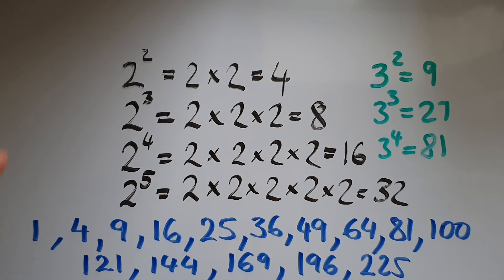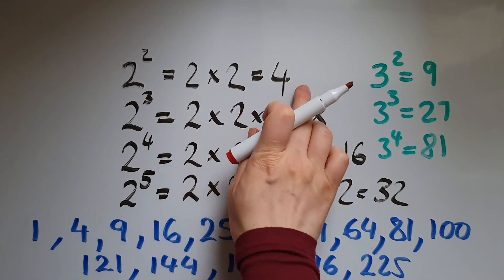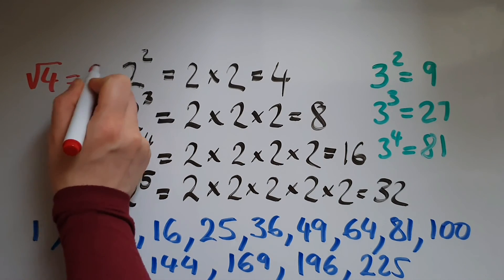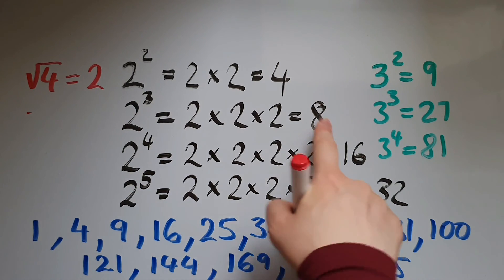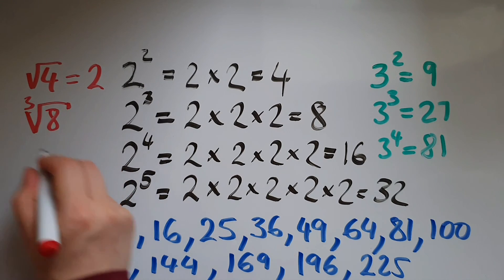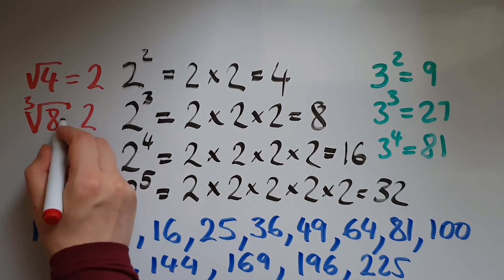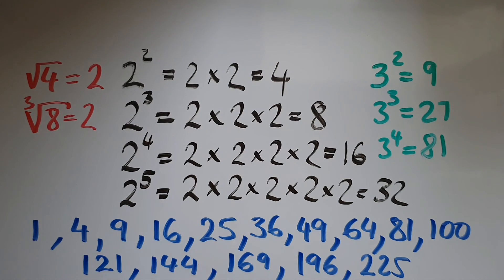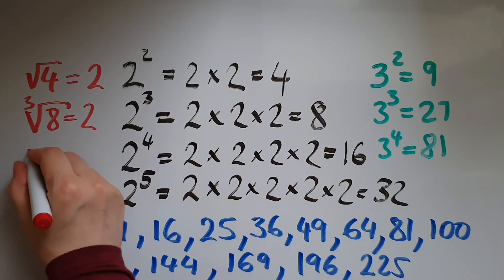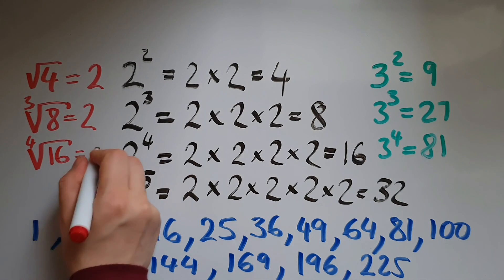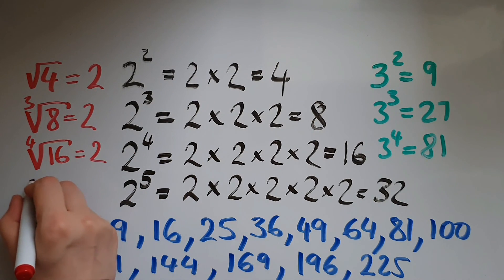The opposite of powers are the roots. So the square root of 4 is equal to 2. The cube root of 8 is 2, because 2 times 2 times 2 gives us 8. The fourth root of 16 is 2. The fifth root of 32 is 2.